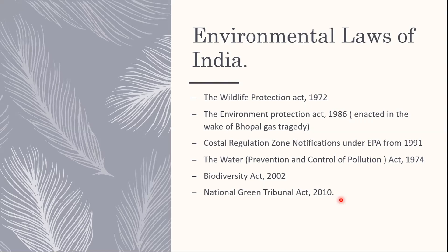In order to put an end to such industrial leakages, the Environment Protection Act was specially formed to protect the environment from industries. Next is the Coastal Regulation Zone Notification, issued by the government under the Environment Protection Act. Next is the Water Prevention and Control of Pollution Act. There is also a corresponding Air Pollution Act, but since we are talking about marine biodiversity, we will focus on water prevention and control. There is a Pollution Control Board at both the state and central levels to regulate pollution by industries. Next is the Biodiversity Act, and next is the National Green Tribunal Act.